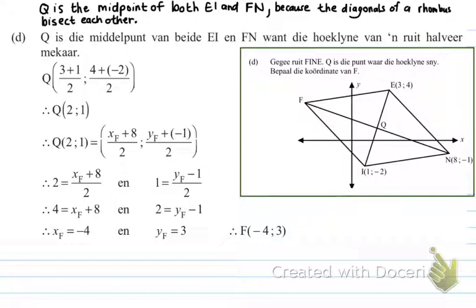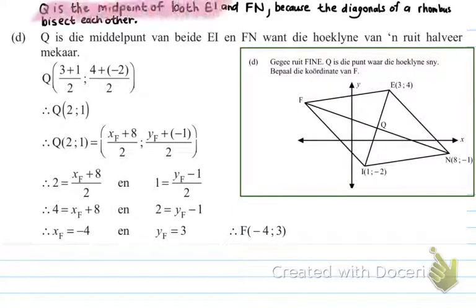Number D: Q is the midpoint of both diagonals. The question gives rhombus FINE with Q as the point where the diagonals intersect. I know that the diagonals of a rhombus bisect each other — they divide one another in half. That means point Q is the midpoint of both EI and FN.